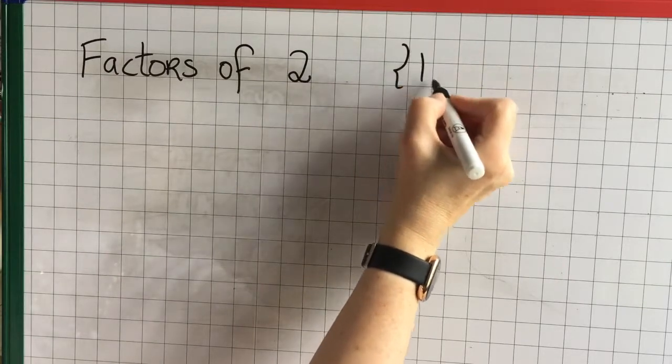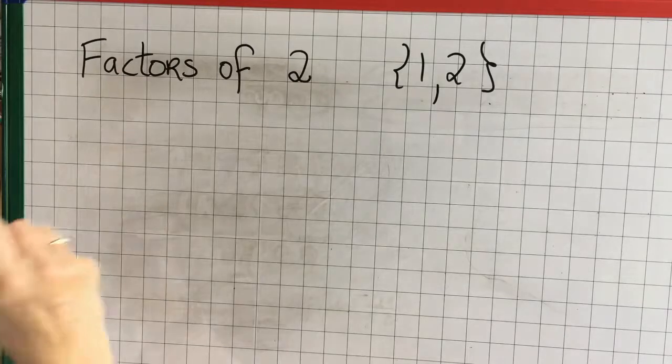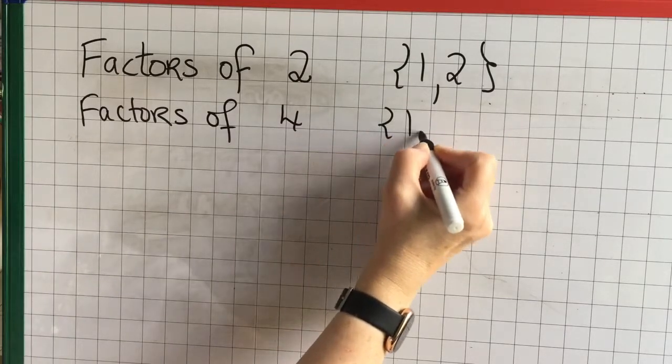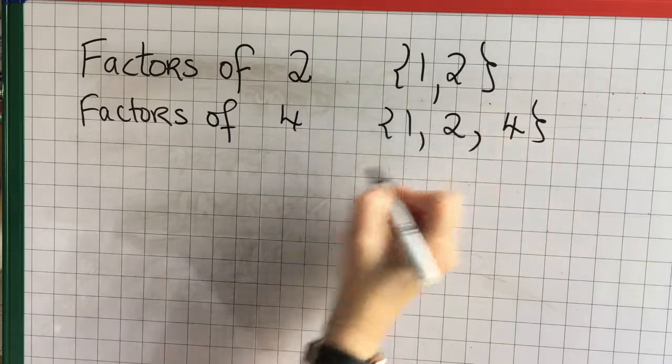The factors of 2 are 1 and 2. Because it's a prime number, it's just got two factors. The factors of 4 are 1 and 4, but also 2.